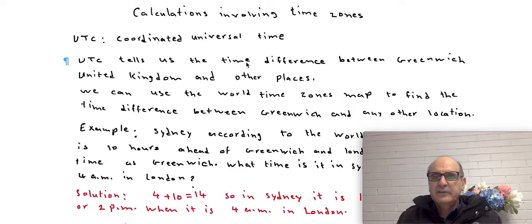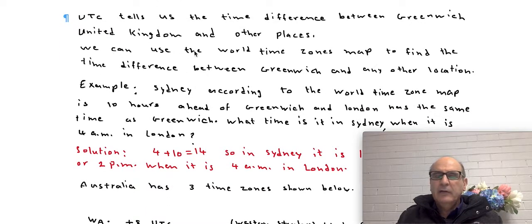UTC tells us the time difference between Greenwich, which is a place in United Kingdom, and all other places. And how do we find for each place how much they are different in time as compared to Greenwich? We can use maps called World Time Zone maps. So by looking at each map you can exactly find out each place how much is behind or ahead as compared to Greenwich time.